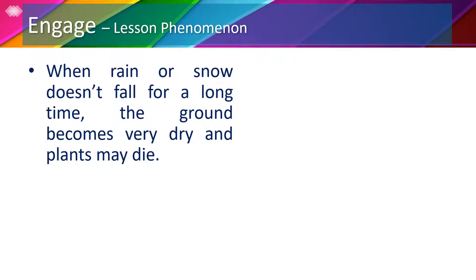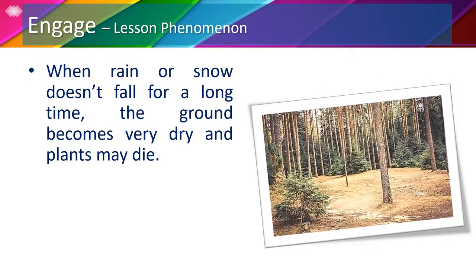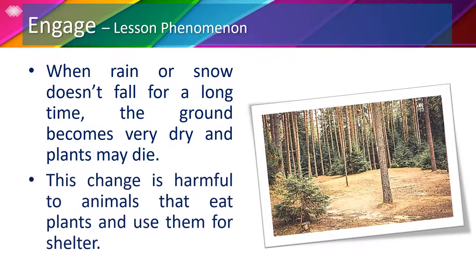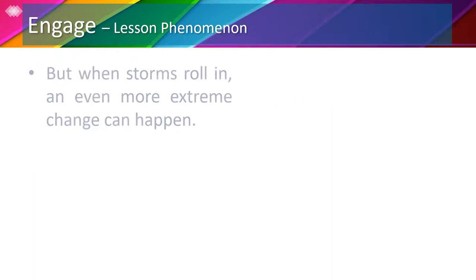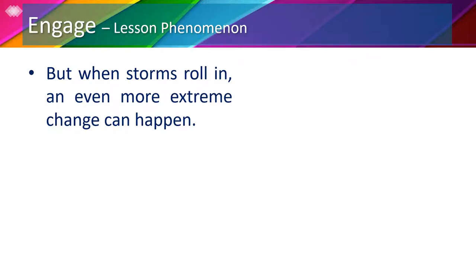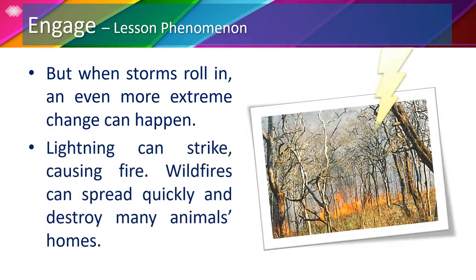When rain or snow doesn't fall for a long time, the ground becomes very dry and plants may die. This change is harmful to animals that eat plants and use them for shelter. But when storms roll in, an even more extreme change can happen — lightning can strike causing fire. Wildfires can spread quickly and destroy many animals' homes.